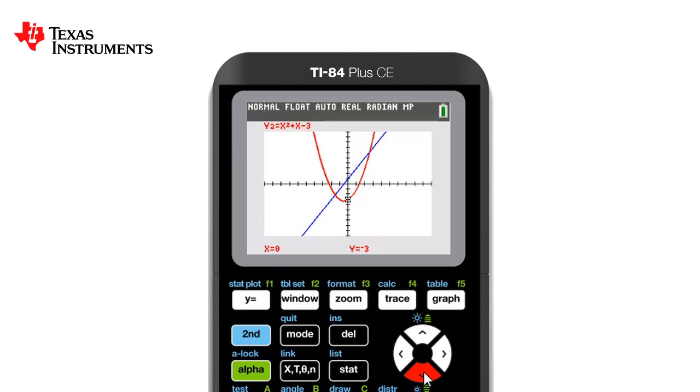If we also want to find other values, we can use the trace key located on the top row and using the left and right arrow, we can move along either line.